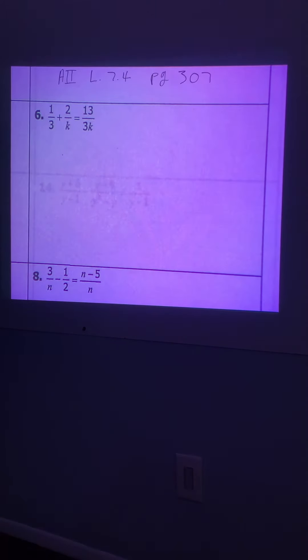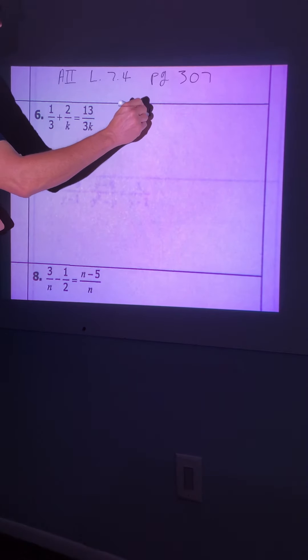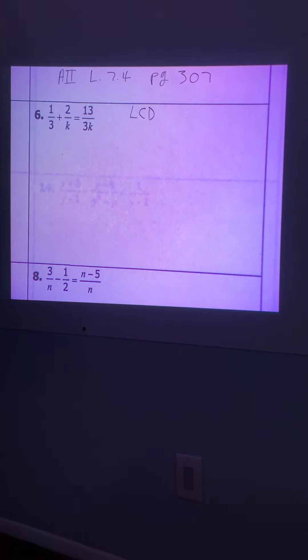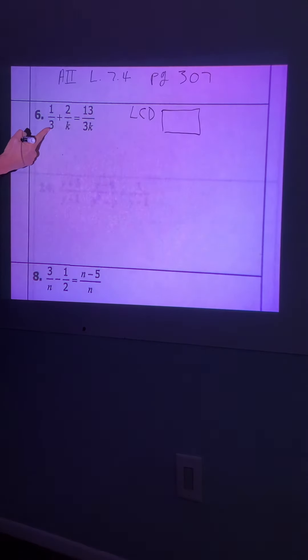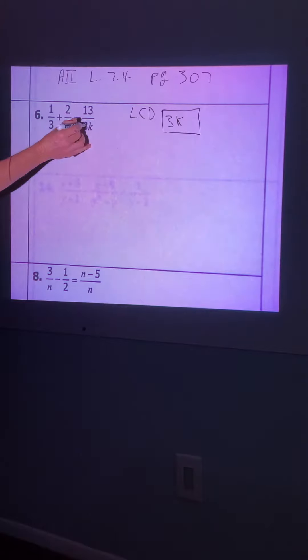Alright, so we're solving for k. I think the best method to use is what we've been doing already, the LCD method. So we're going to find the lowest common denominator to solve for k. You look at all three denominators, and if you remember what I said, you're going to include all factors that you see. Well, 3 is a prime factor. I see it. I want it. k is a prime factor. I see it. I want it. And then over here, it's 3 and k together, but they're already accounted for over there. So the LCD for number 6 is going to be 3k.